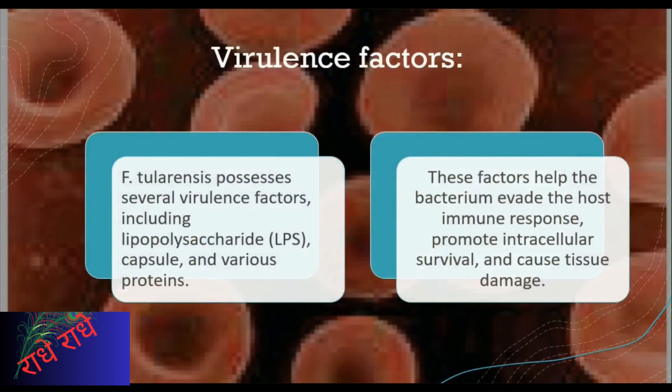F. tularensis is a bacteria that can be deadly, which produces various virulence factors to aid its pathogenesis. These factors include lipopolysaccharide, capsule, and several proteins, and enable the bacteria to survive and cause tissue damage in its host. With advancements in treatment, we could possibly stop or reduce the degree of infection.